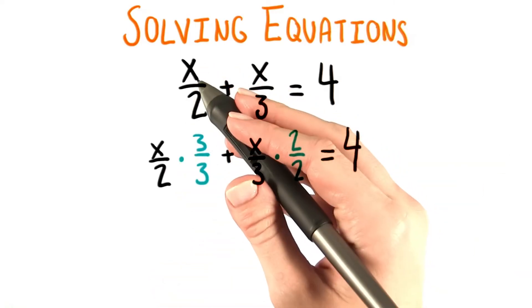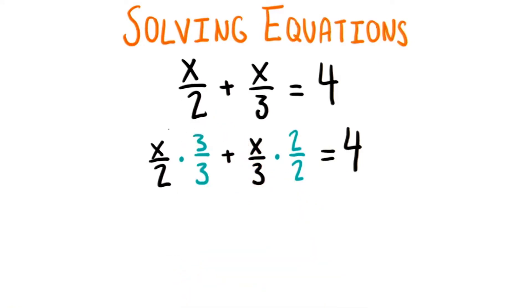To change the fraction x over 2 to have a denominator of 6 instead, we need to multiply it by 1 in the form of 3 over 3, since 2 times 3 is 6.